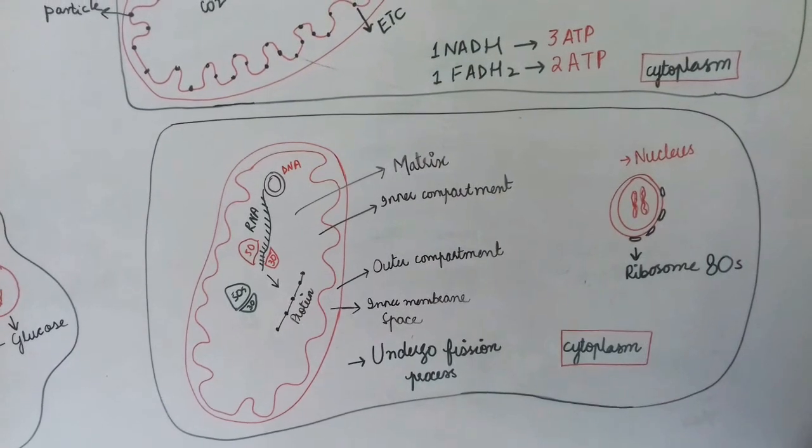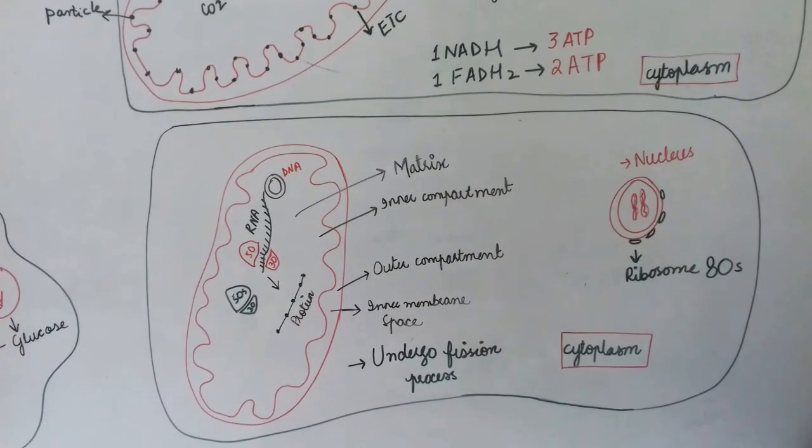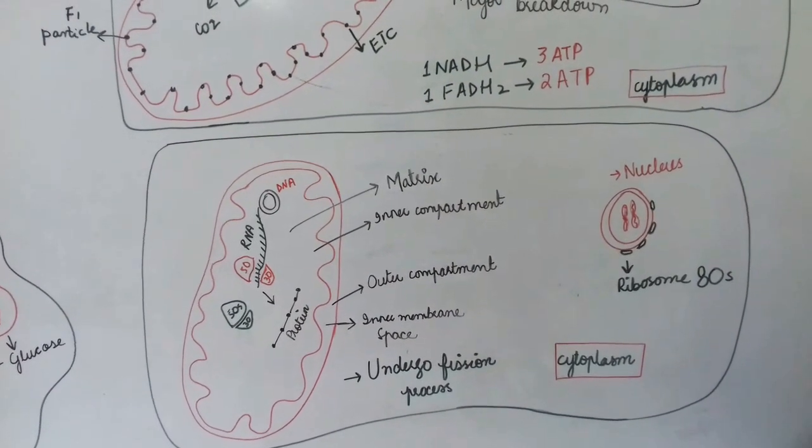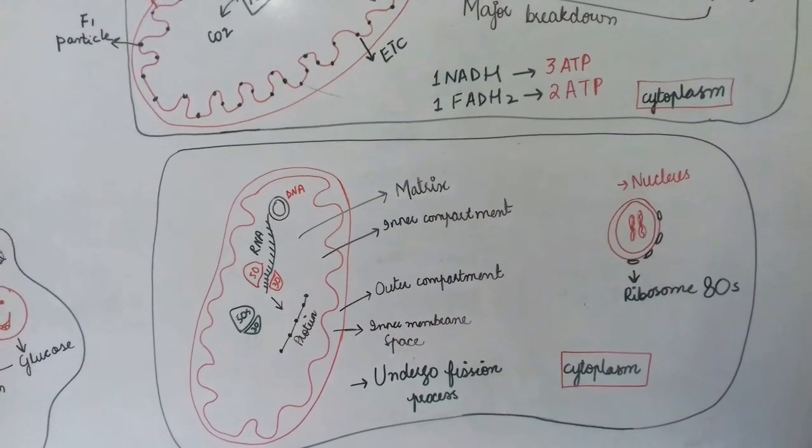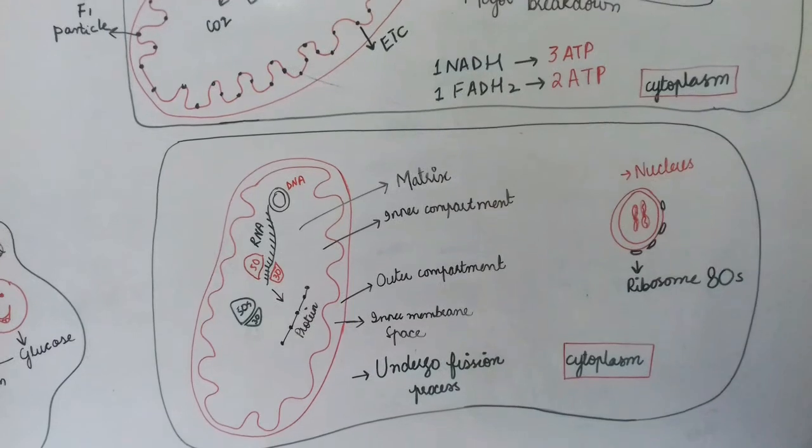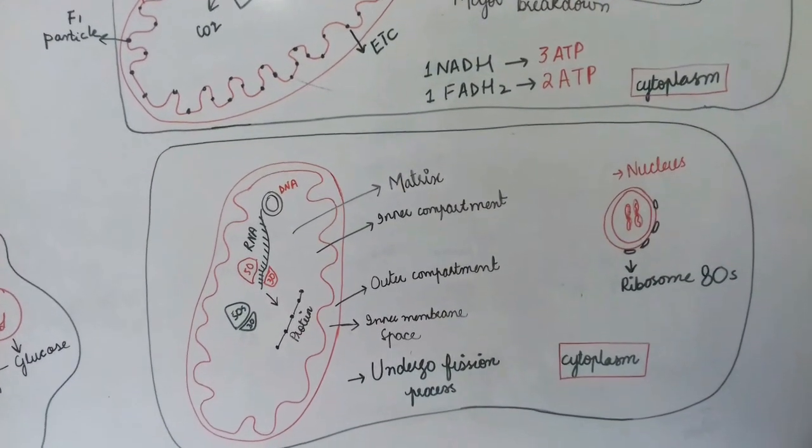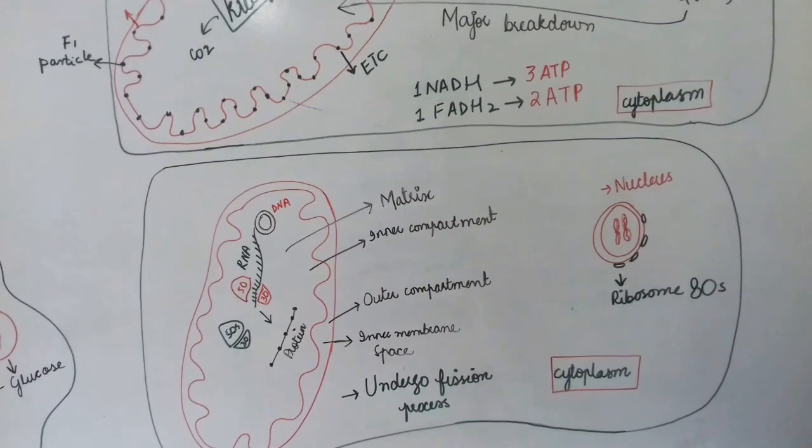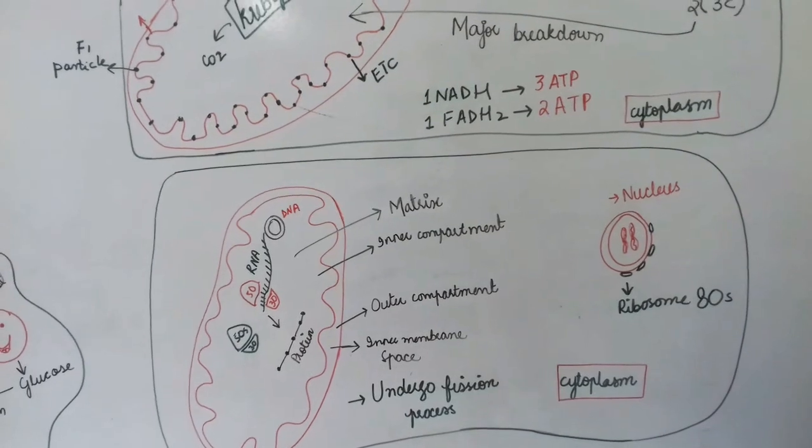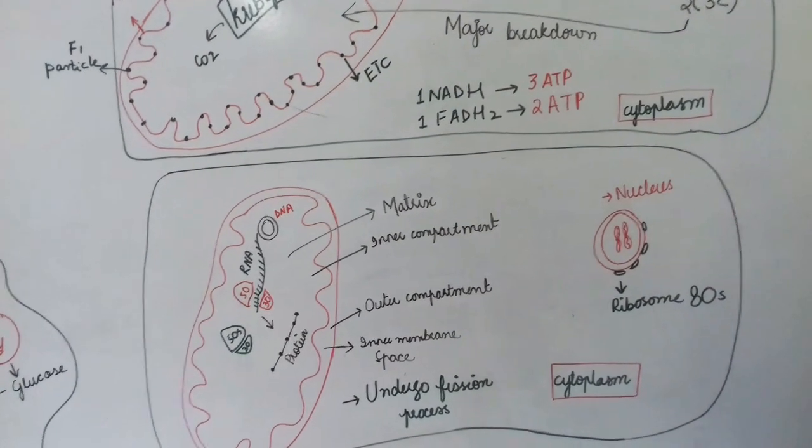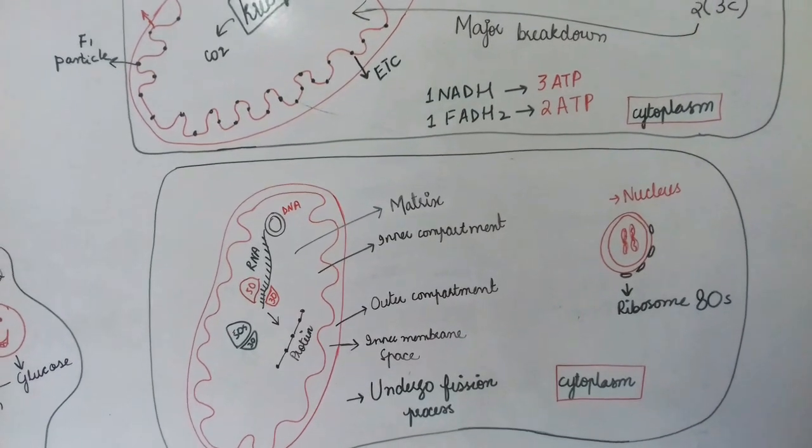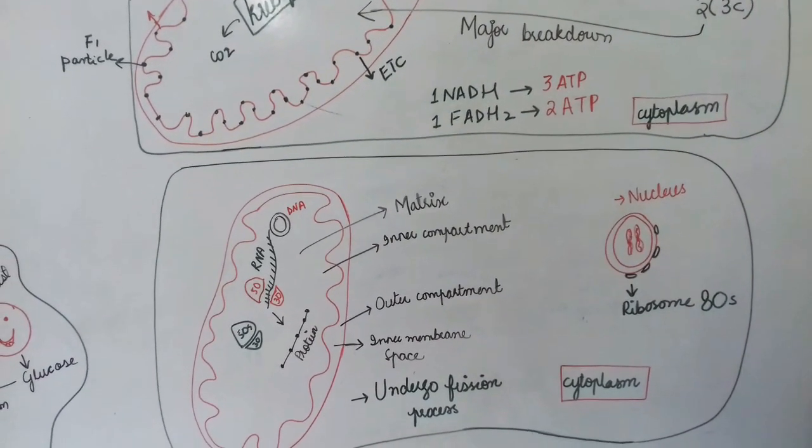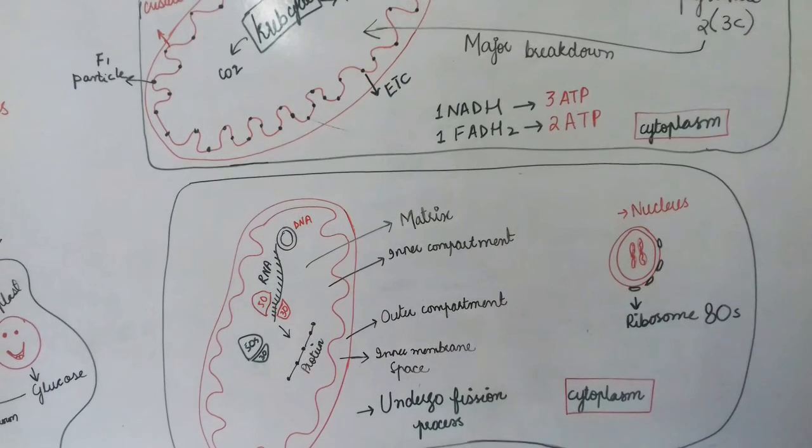Mitochondria undergoes fission and is a self-replicating organelle. It has prokaryotic characteristics: DNA, ribosomes, and is self-replicating. So we can say it was originally prokaryotic. While in the nucleus, the ribosomes are 80S and DNA is in compact form.